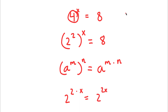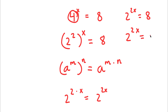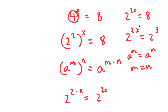So now I have 2 to the power of 2x is equal to 8. Now 8 I can rewrite as 2 to the power of 3. So now I have 2 to the power of 2x is equal to 2 to the power of 3. If you have something in the form a to the power of m is equal to a to the power of n, this means that m is equal to n. So in this case, 2x is equal to 3.